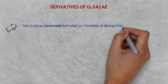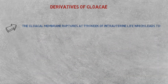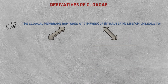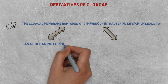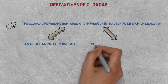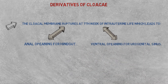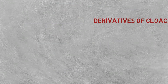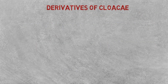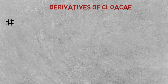The cloacal membrane drops at the seventh week of intrauterine life, which leads to two parts: number one, the anal opening for the hindgut, and number two, the ventral opening for the urogenital sinus. The anal opening for the hindgut further undergoes formation of the anal canal.